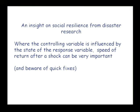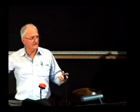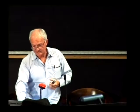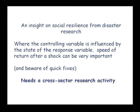At a research meeting on disaster research in the UK, it became apparent that where the controlling variable is influenced by the state of the response variable, the speed of return after a shock is very important. If you leave the system in a disturbed state too long, the controlling variable adjusts accordingly through feedback and the system actually can't be returned back. The corollary is: beware of quick fixes. If you fix a system quickly and leave it, the slow variable state will drag it back to what it was. This fast-slow variable interaction is really important and needs cross-sector research with social scientists and biophysical scientists.